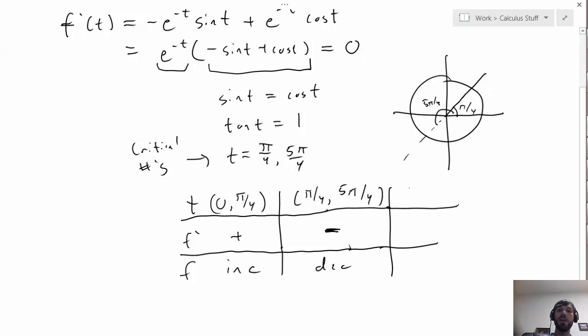Finally, from 5π over 4 to 2π, we do have this interval where cosine and sine are both negative, but then we have another interval here where cosine is now positive and sine is negative. Overall, the derivative is going to be positive over this interval, which means that f is increasing.